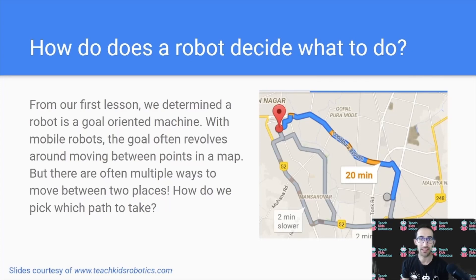How does a robot decide what to do? From our first lesson, we determined a robot is a goal-oriented machine. And with mobile robots, the goal often revolves around moving between points in a map. But there are often multiple ways to move between two places. So how do we pick which path to take?